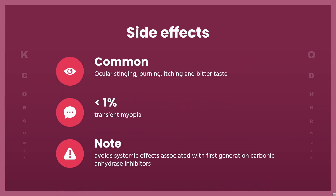Side effects include ocular stinging, burning, itching, and bitter taste. It causes shallowing of the anterior chamber and leads to transient myopia. As a second-generation carbonic anhydrase inhibitor, dorzolamide avoids systemic effects associated with first-generation carbonic anhydrase inhibitors such as acetazolamide, methazolamide, and dichlorphenamide.